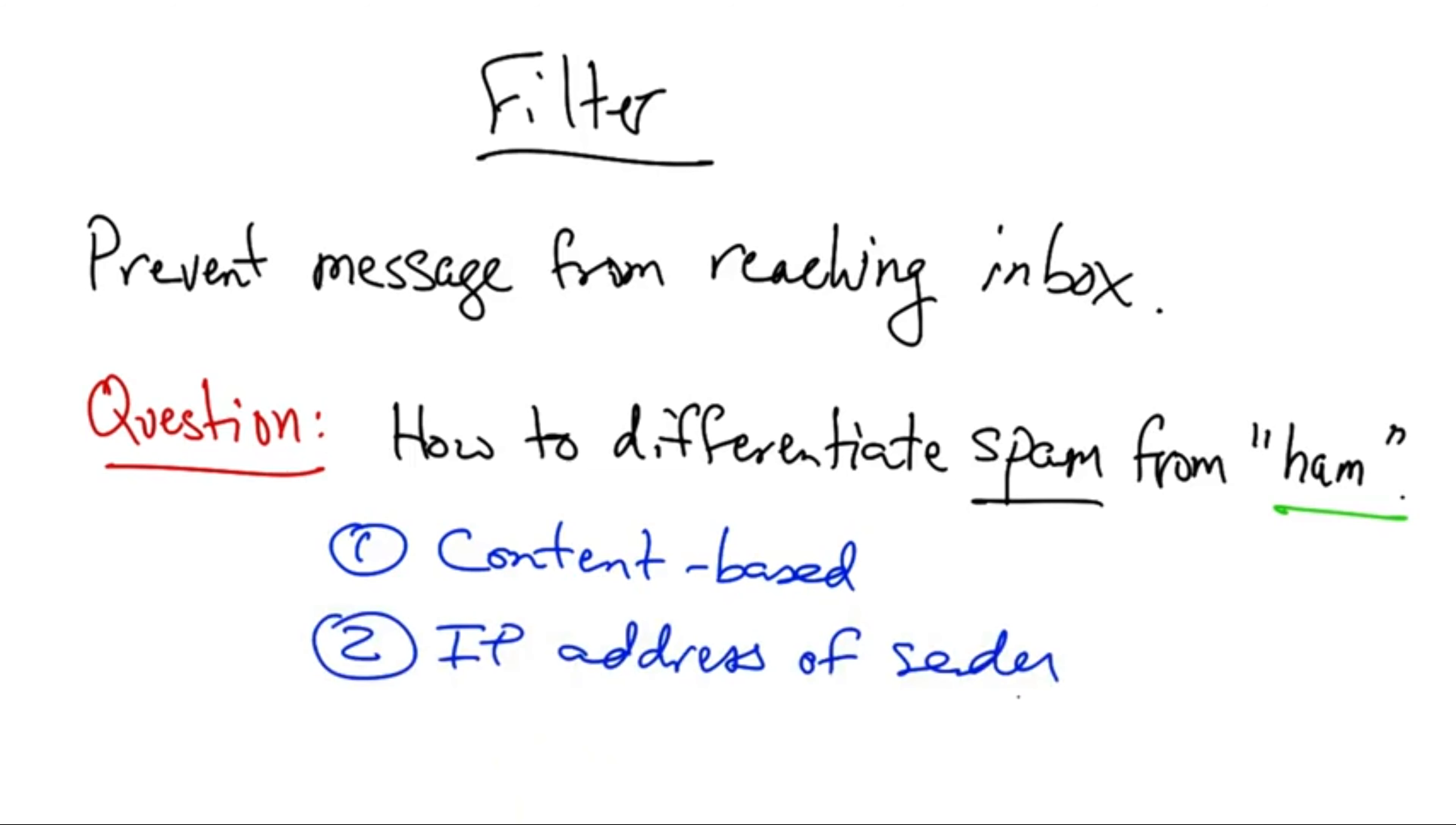Second, a filter might make a decision about whether an email message is spam or ham based on the IP address of the sender. This method is often called blacklisting.